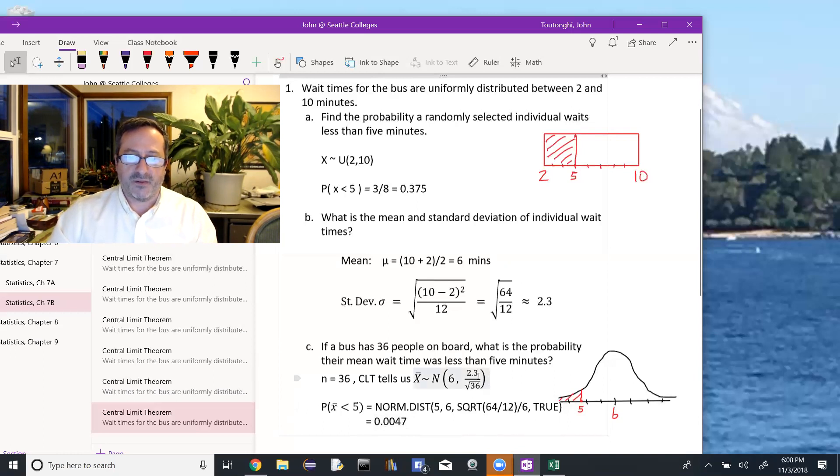In the third part, when we're using the central limit theorem, we notice it has 36 people and that we're looking for the probability of their mean wait time, not the individual wait time, but their mean wait time. So n is 36, using the central limit theorem to get a new type of distribution, now a normal distribution with a mean of 6 and a new standard deviation, the original standard deviation divided by the square root of n.